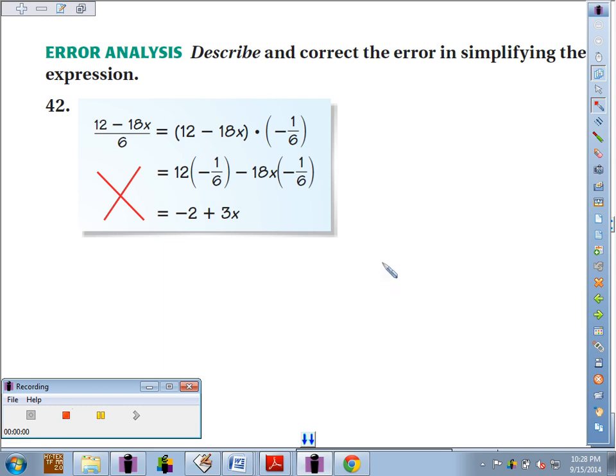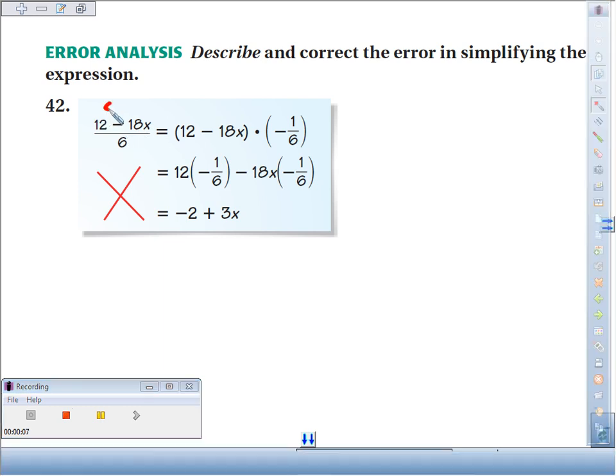42, we're supposed to describe and correct the error in simplifying the expression. 12 minus 18x over 6, I would earthquake that and have everything fall down on the 6.